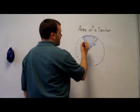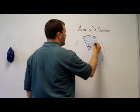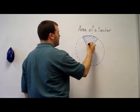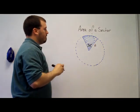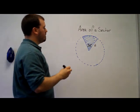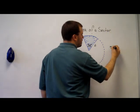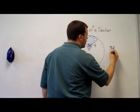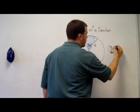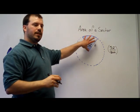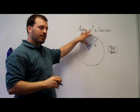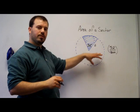So if we have a problem where the radius is 8, and the central angle is 52 degrees, we would simply do 52 over 360. Because this sector takes up 52 degrees out of the total 360 degrees of the circle,